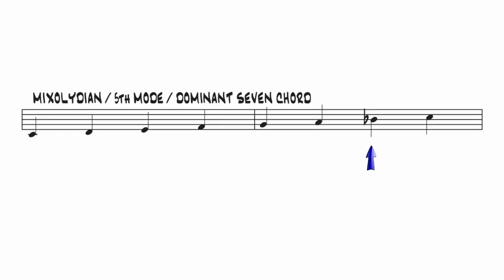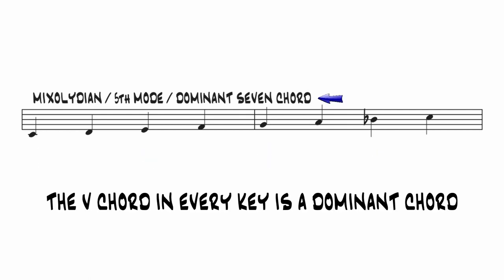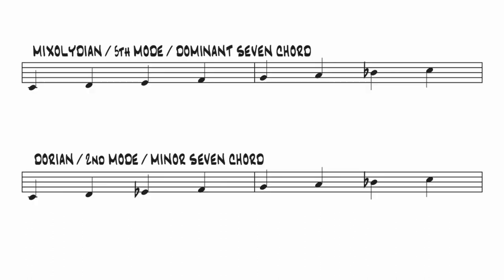The next mode to learn would be Mixolydian, which lowers the seventh note. This scale produces a dominant 7 chord — 1, 3, 5, and flat 7. The 5 chord in every key is a dominant chord, and 5 chords occur frequently in functional harmony. Less so in modal harmony, but I'll have more to say on that coming up.